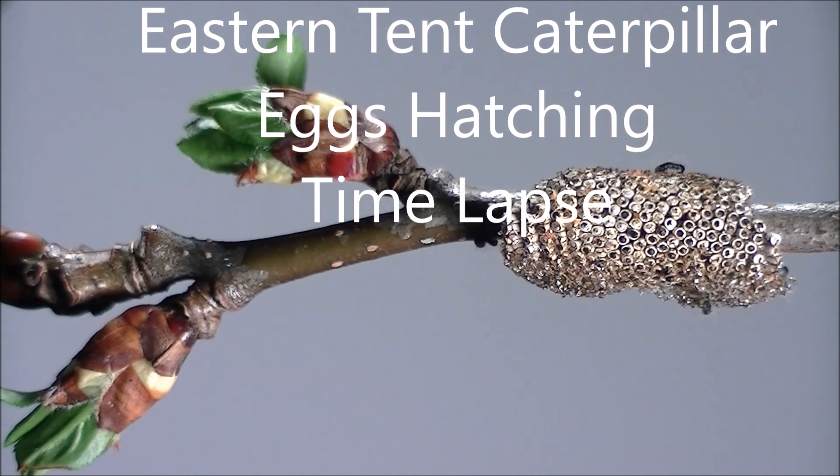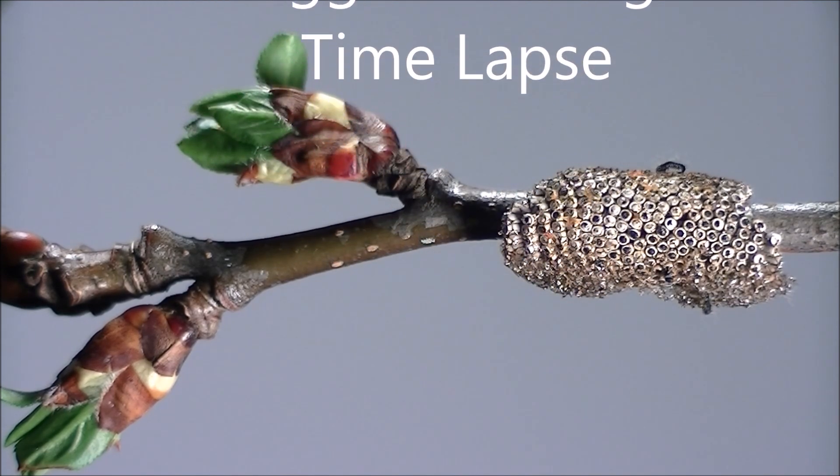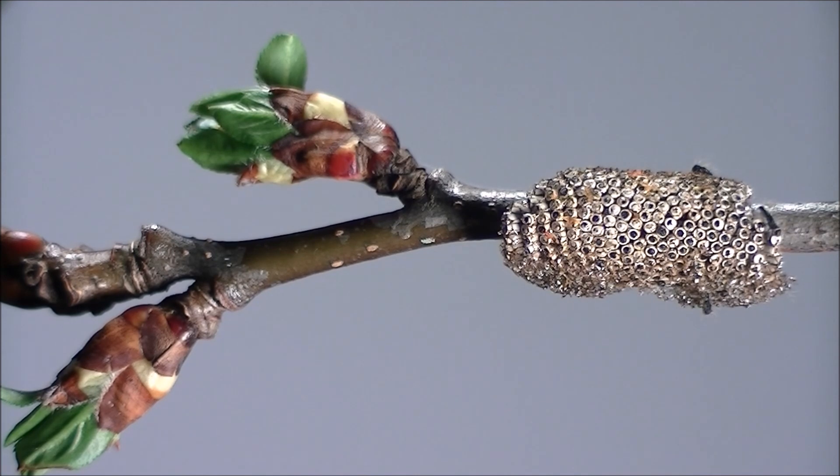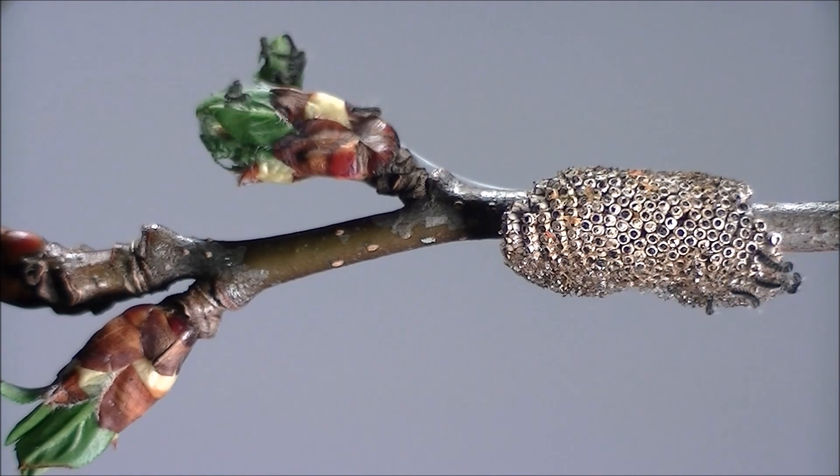The eggs of the eastern tent caterpillar hatch just as the first buds of spring begin to open. The tiny caterpillars have been at rest inside their eggs since the past summer.